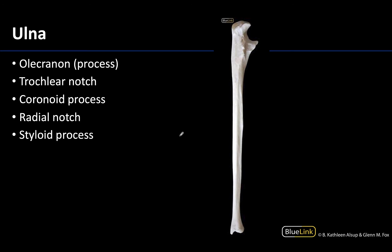Starting with the more medial bone, the ulna — the proximal portion is considerably more complex and the distal end will be much smaller, not actually making its way all the way to the carpal bones. We are looking at a lateral view here, and I know that because I can see this nice smooth area which is the radial notch. The radial notch allows for the periphery of the radial head to articulate, and since the radius is always lateral, if the radial notch is facing you, you know you are looking at a lateral view.